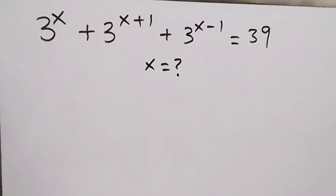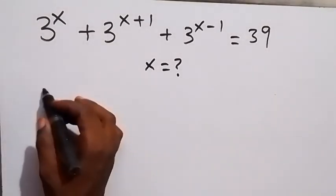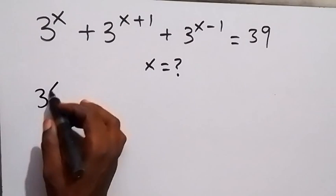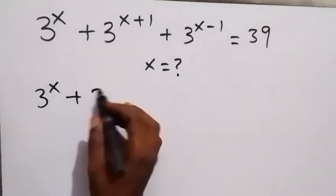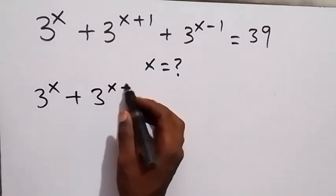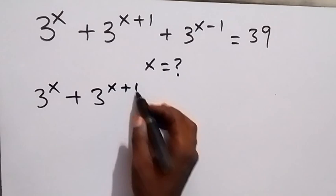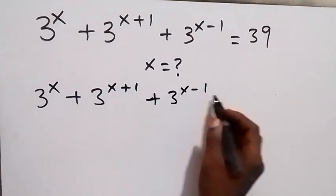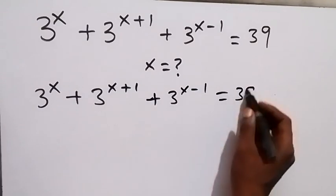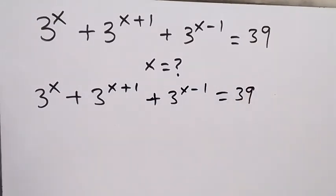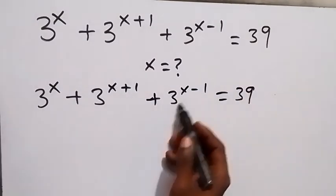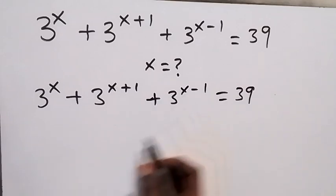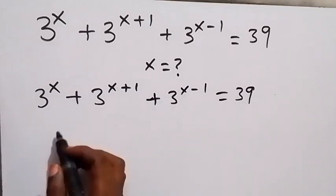Hello, you are welcome. How to solve this nice algebra equation — finding the value of x. We have 3 raised to power x, plus 3 raised to power x plus 1, then plus 3 raised to power x minus 1, equals to 39. Let's rearrange this and write 3 raised to power x minus 1 first.